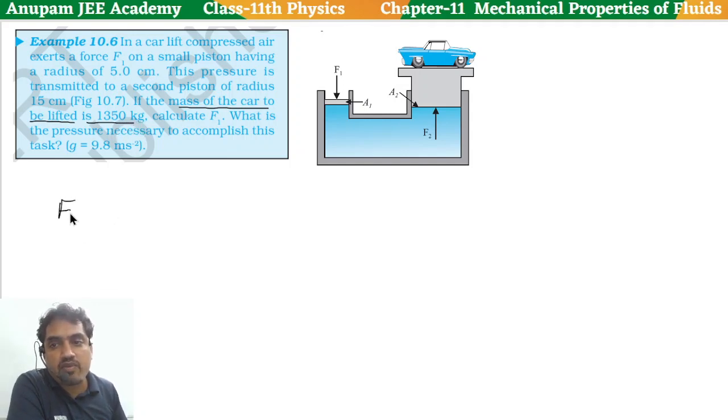If we talk about F2, it will be Mg equal to 1350, and g value is 9.8, so it will be 9.8. That is F2.